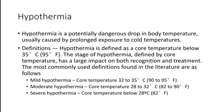The stage of hypothermia is defined by core temperature, which has a large impact on both recognition and treatment. Hypothermia is classified into 3 major types: mild, moderate, and severe. Mild is a core temperature of 32 to 35 degrees Celsius, moderate is 28 to 32 degrees Celsius, and severe is defined as less than 28 degrees Celsius.